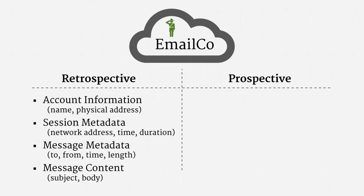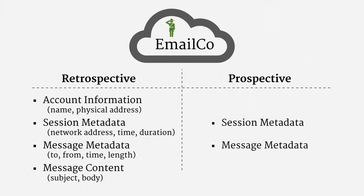So, there are our four buckets on the retrospective side. Over on the prospective side, we have the exact same metadata and content buckets. The only difference is that there is no account information bucket. As we saw with telephones, account information is just always treated as retrospective. Okay, that might look a little intimidating, but we're going to take it slowly and in parts.